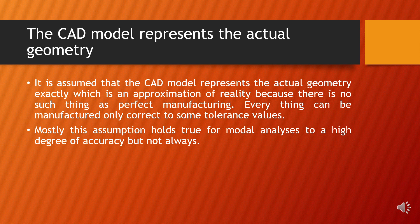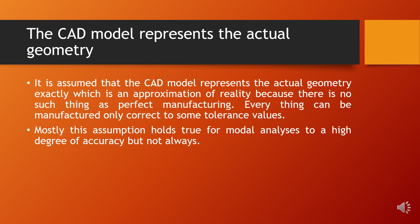The first assumption is that the CAD model represents the actual geometry. The CAD model will have a perfect thickness, a perfect fillet radius, and all those things. But while manufacturing, that is not always possible. The thickness may not be exactly equal to what we intended, and the fillet radius may not be exactly what we intended. It is important that the CAD model represents the actual geometry to a high degree of accuracy — then only our modal analysis will be accurate.